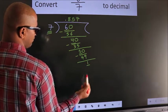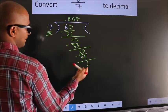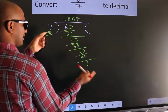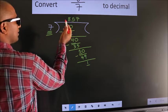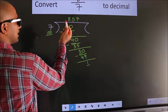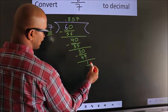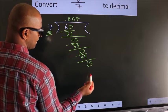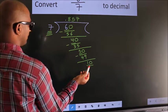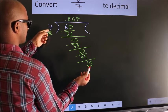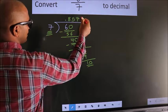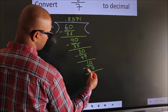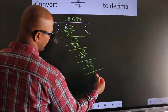Here we have 1, here 7. 1 is smaller than 7. And we already have the decimal, so we can directly take 0. So 10. A number close to 10 in the 7 table is 7 once, 7. Now we subtract. We get 3.